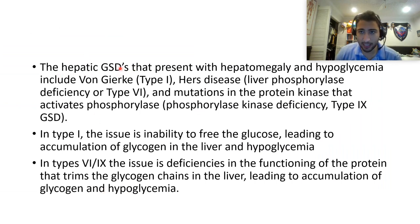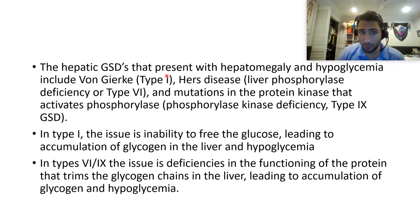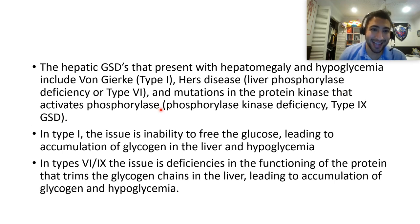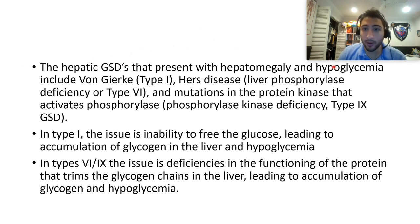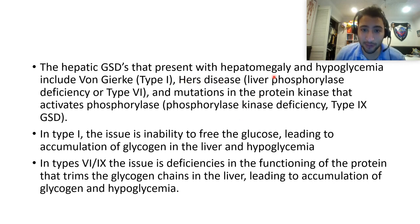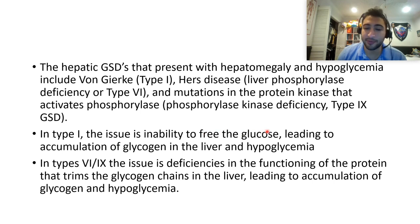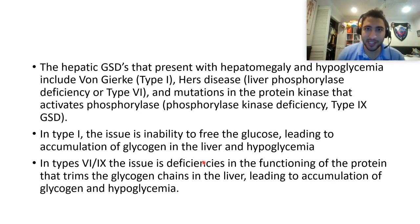The hepatic glycogen storage diseases presenting with hepatomegaly and hypoglycemia include: Type 1 (Von Gierke) — glucose-6-phosphatase deficiency; Type 6 (Hers disease) — liver phosphorylase deficiency; and Type 9 — mutations in the protein kinase that activates phosphorylase. In type 1 the issue is inability to free glucose, leading to glycogen accumulation and hypoglycemia. In types 6 and 9, the issue is deficiency in proteins that trim glycogen chains in the liver.